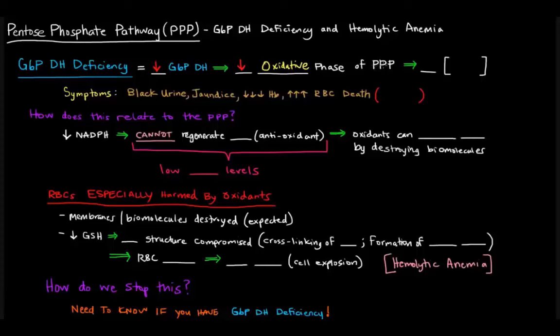We're going to have less of this oxidative phase of the pentose phosphate pathway, and the products of that phase were, of course, NADPH and ribose 5-phosphate. The non-oxidative phase creates R5P without creating NADPH.